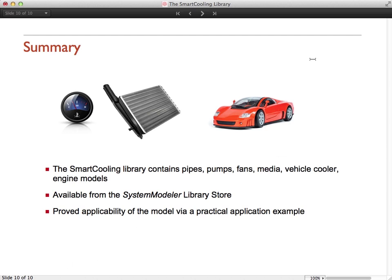To sum this up, the smart cooling library contains components for cooling circuits including pipes, pumps, fans, media, coolers, engine models. It's directly available from the system modeler library store. And we've demonstrated this with a practical application example.